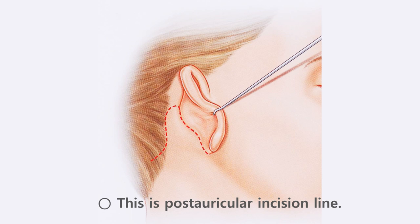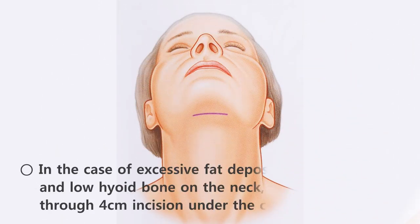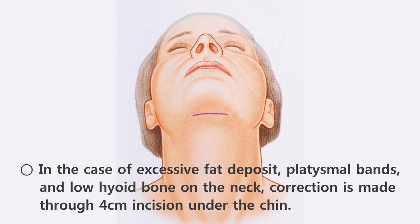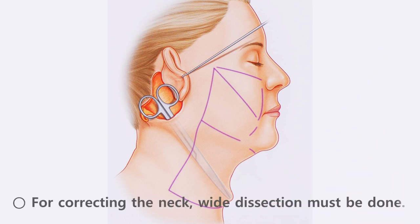Shown here is the post-auricular incision line. Incision must extend behind the ear in order to pull the neck and jawline. Especially if there is a large fat deposit under the chin or the person has a thick neck, incision is made right beneath the jawline for liposuction. In some cases, there are platysmal bands or a low hyoid bone position, requiring about a 4cm incision under the jawline. After pre and post-auricular incision, skin is dissected on the subcutaneous fat layer. Wide dissection is essential for making the neckline later on.